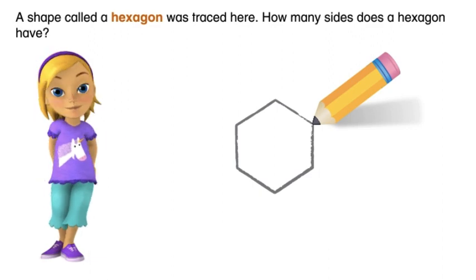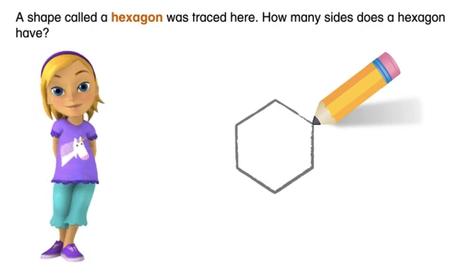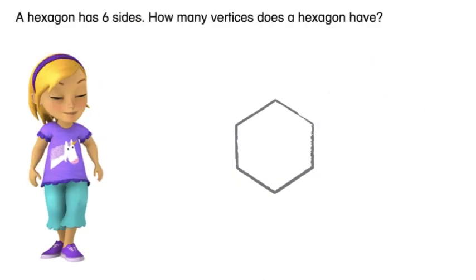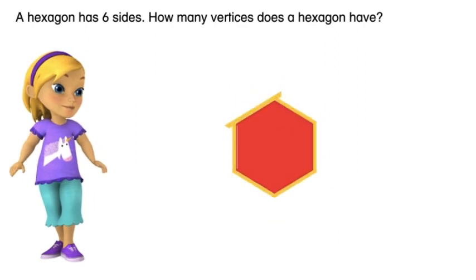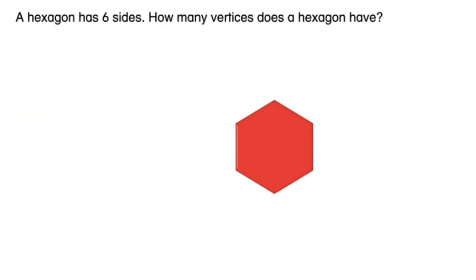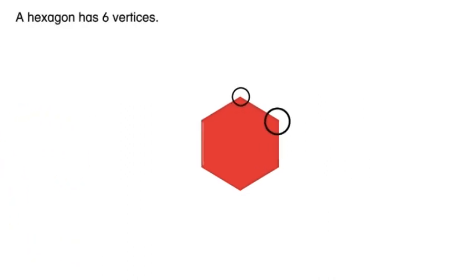A shape called a hexagon was traced here. How many sides does a hexagon have? A hexagon has six sides. How many vertices does a hexagon have? A hexagon has six vertices.